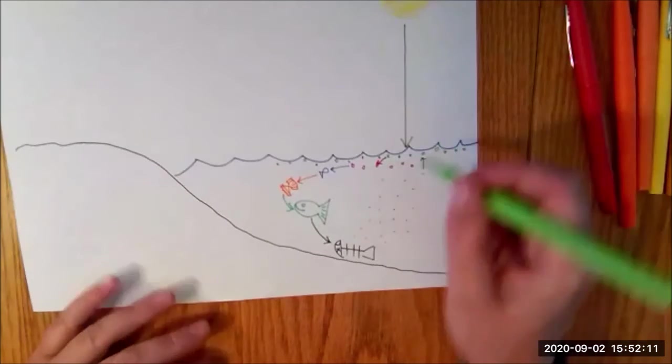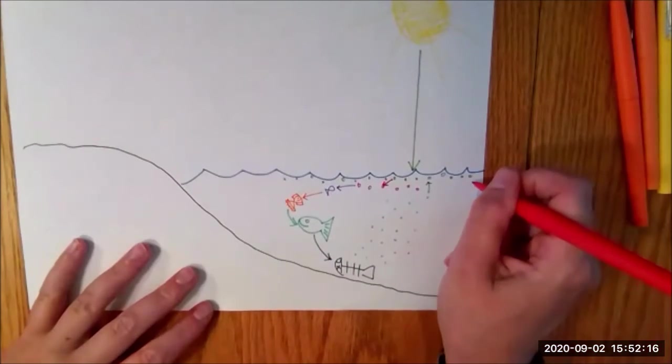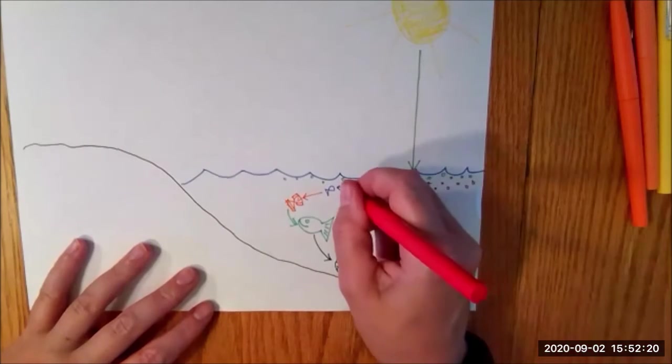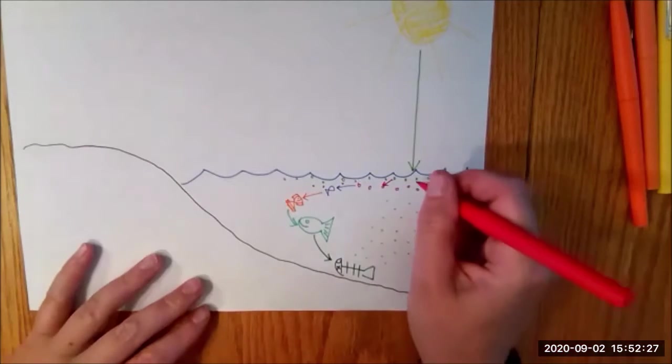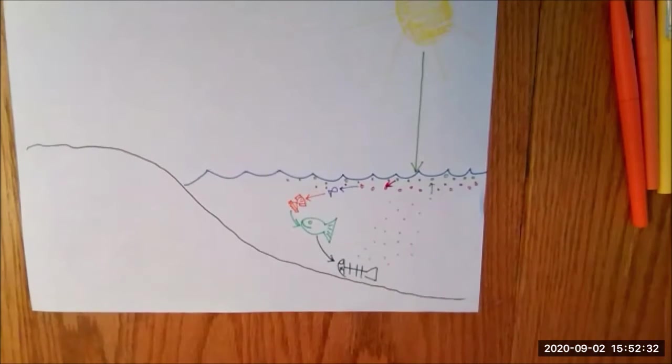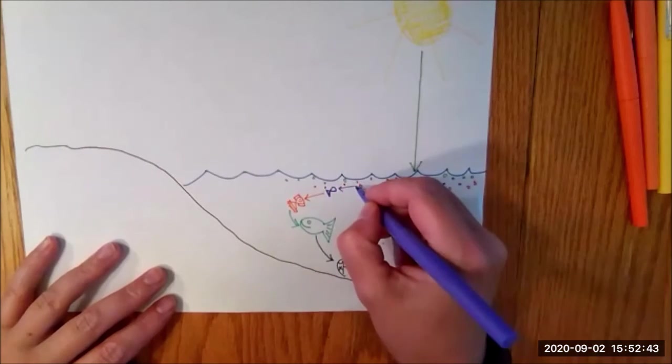They get the nutrients from the decomposing fish and they get nutrients from the sun. Now there's another kind of life that lives right below the surface, a little further down. Now these little particles eat the phytoplankton. So they eat the phytoplankton and the phytoplankton live their life being happy little, or zooplankton I'm sorry, the zooplankton live their happy little plankton life until fish like little purple fish come along and eat them.